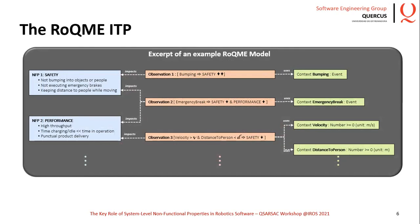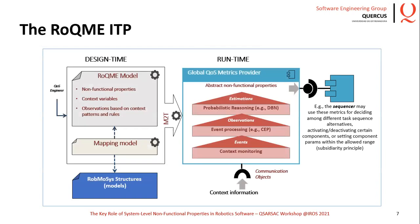These observations describe how positively or negatively, and to what extent, certain situations defined as context patterns impact on each non-functional property. Thus, when a bump is detected, safety is very highly undermined, while emergency breaks undermine both safety and performance, but less. The resulting ROGMI model is then used to generate and configure the runtime infrastructure needed to monitor the context, identify context patterns, and estimate through normalized metrics the evolution of the non-functional properties previously modeled. These metrics can then be used by other components for different purposes.